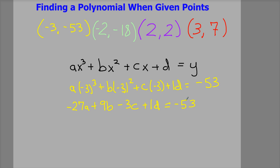And like this, you'll end up getting plus 9b, and then negative 3c plus 1d is equal to negative 53. Now, from here, I'm actually going to go through and write out the other three and move this one up a little bit. So I'm going to pause the video so you don't have to sit here and watch me do it, because it will take a little bit of time. But essentially, I'm going to take this negative 2 and plug it in for x and set it equal to negative 18. And then I'm going to do the same thing for the positive 2, plug it in for x and set it equal to 2, and the 3 and plug it in for x and then put the 7 for the y.